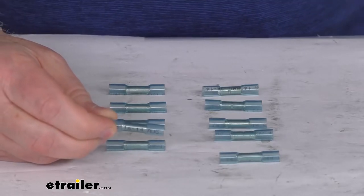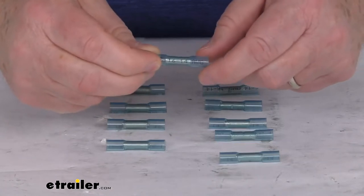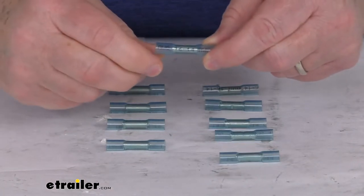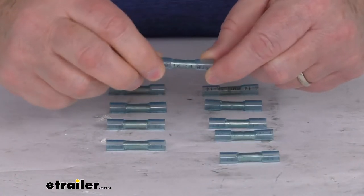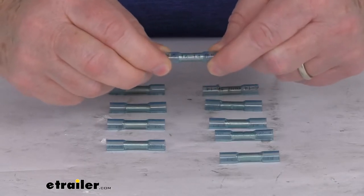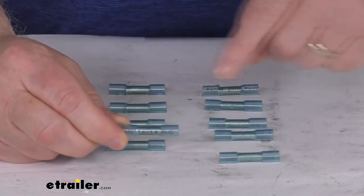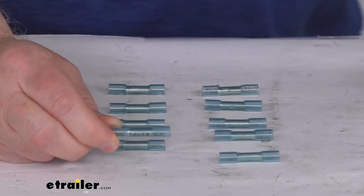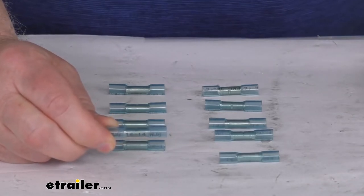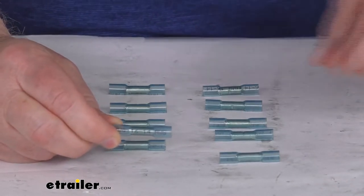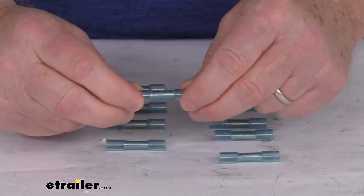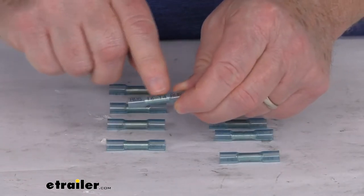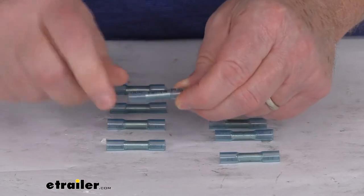These blue butt connectors will join two lengths of 16 gauge or 14 gauge size wire and insulate the connection with heat shrinkable nylon for adjustability and durability. The blue color indicates the size wire that this connector will fit, which is the 16 to 14 gauge size. If you don't remember what size the color is, you can just look on them and they stamp it on there: 16 to 14 AWG.